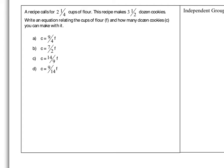Let's go ahead and look over the solution to the do now. It says the recipe calls for two and one-fourth cups of flour. This recipe makes three and a half dozen cookies. Write an equation relating the cups of flour and how many dozen cookies you can make with it.